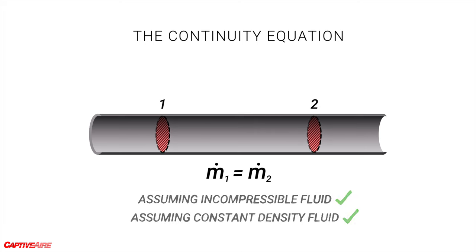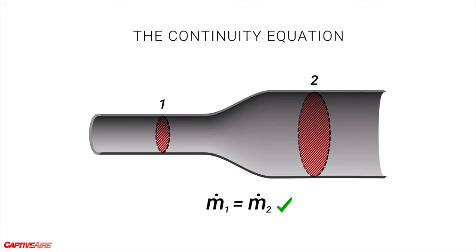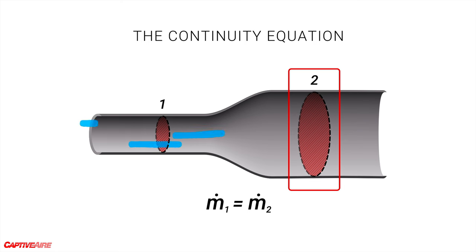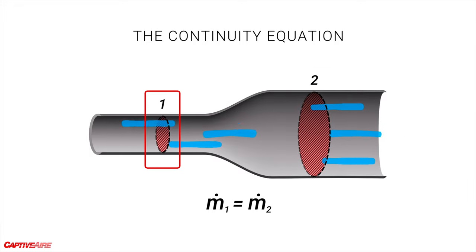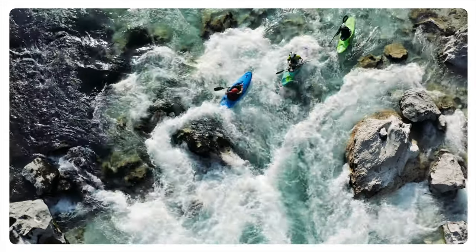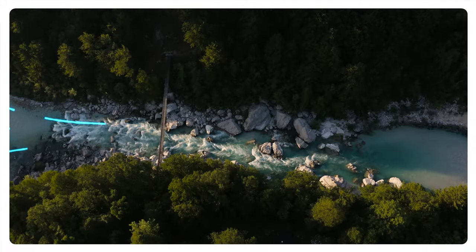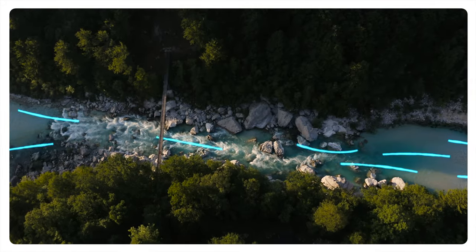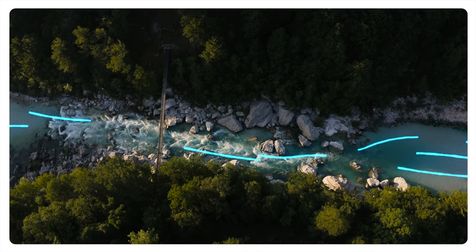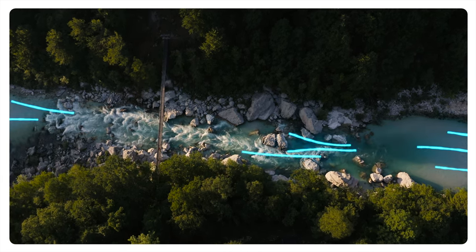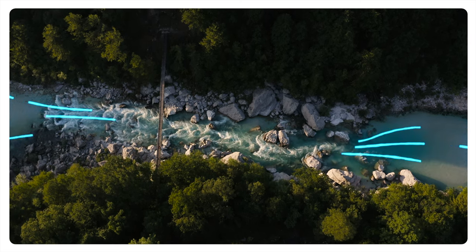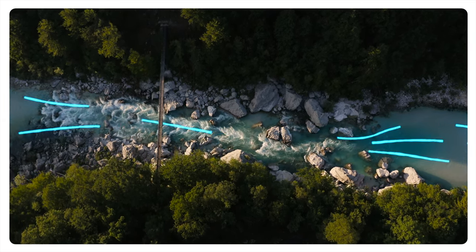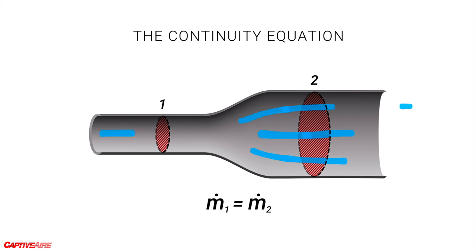Now what happens if the diameter of the pipe changes between these two points? The equation remains true, but the bigger diameter pipe can hold a bigger quantity of water. This means the water moving through the larger diameter section has to be moving slower than through the smaller section. Think of floating down a river — when it's wide and deep the water moves slowly, but in a narrow or shallow section it speeds up because the same mass of water is moving the whole time.